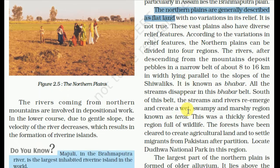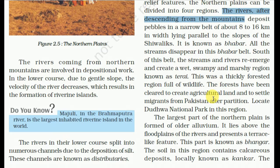The northern plains are generally described as flat land with no variation in relief — but this is not true. These vast plains also have diverse relief features. According to the variation in relief features, the northern plains can be divided into four regions. The rivers descending from the mountains deposit boulders in a narrow belt of about 8 to 16 km in width along the foothills of the Shivaliks — this is known as Bhabar. All the streams disappear in this Bhabar belt.